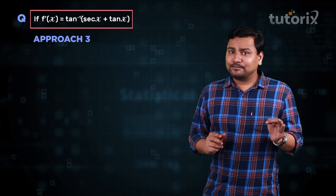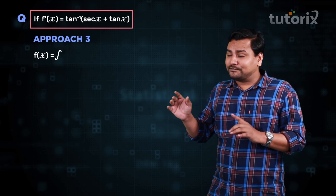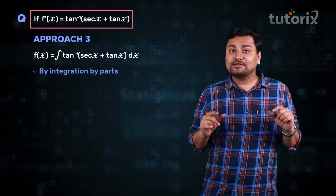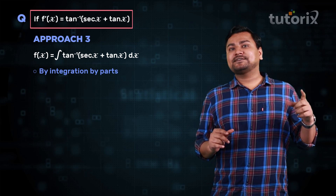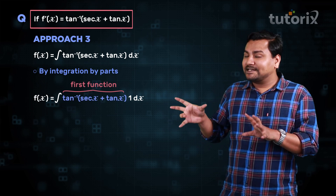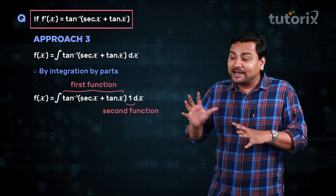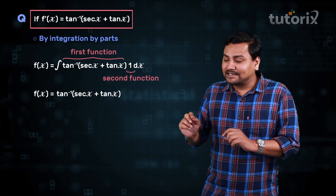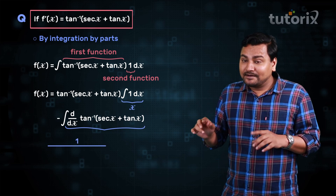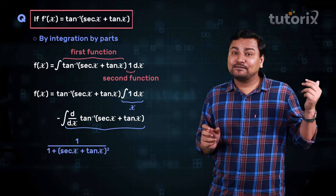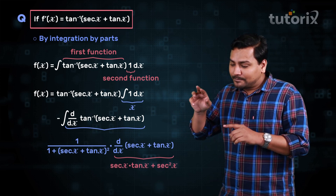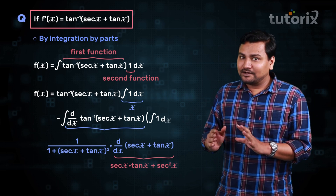Now let's see the third approach: calculating the integral of tan inverse (secant x plus tan x) using integration by parts — since we've calculated the integral of tan inverse x by parts before. We keep the first function as tan inverse (secant x plus tan x) and the second function as 1. By integration by parts this equals tan inverse (secant x plus tan x) times x, minus the integral of [derivative of the first function] times x.